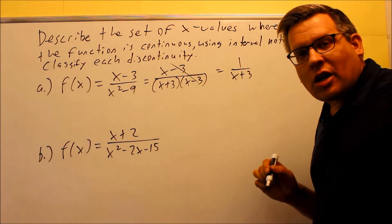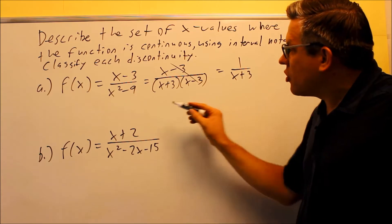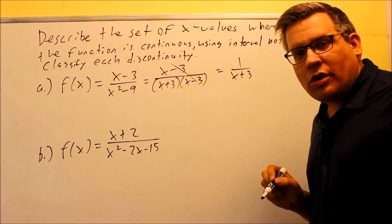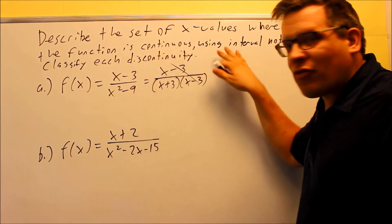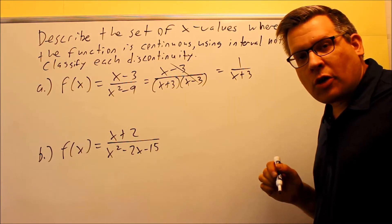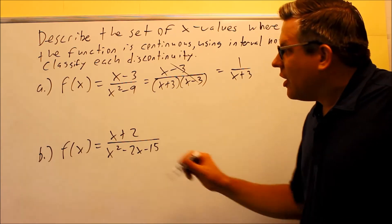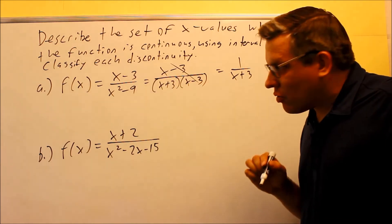Now when you talk about discontinuities, you do not want to use the final reduced product. You want to always go back to the original one. In the original problem, before I factored anything, both 3 and negative 3 are not going to work because in that case you're dividing by 0. So as far as discontinuities are concerned, you're going to have both 3 and negative 3.